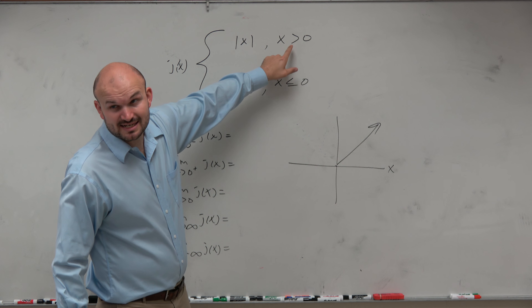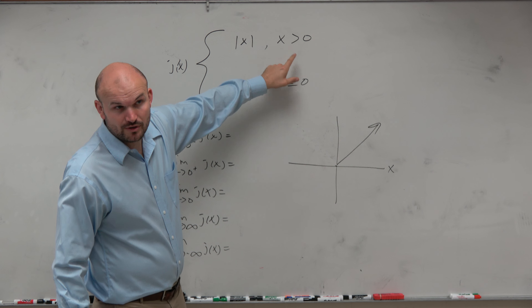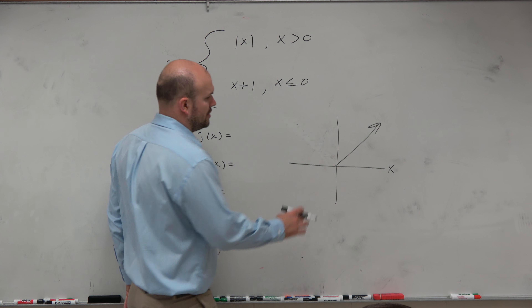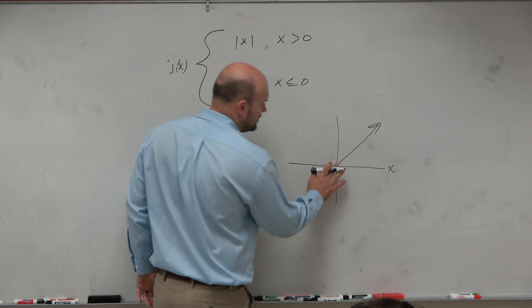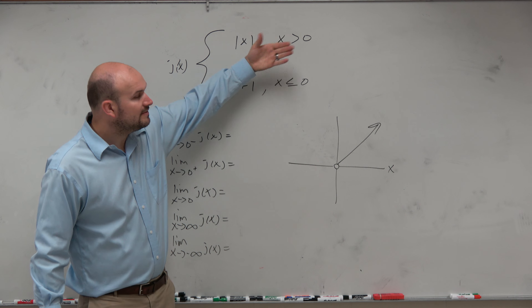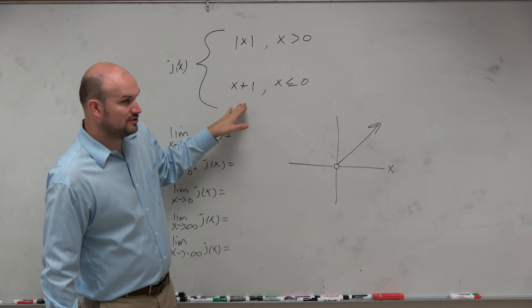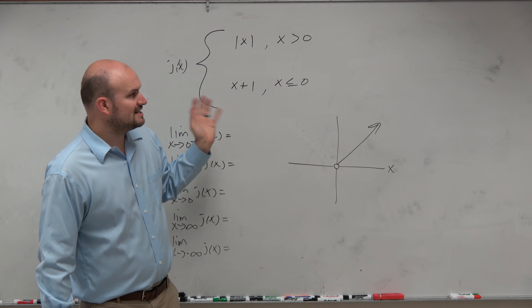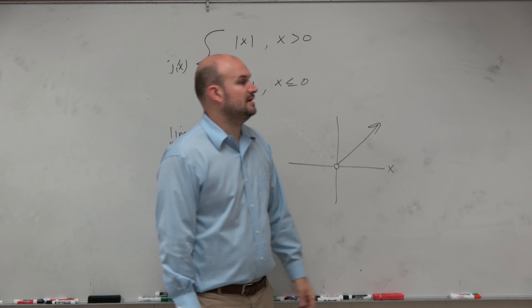So let's look at piecewise functions again. The piecewise function j of x is basically just saying two or more functions. So let's graph absolute value of x — you guys should know that's the v-shape graph.